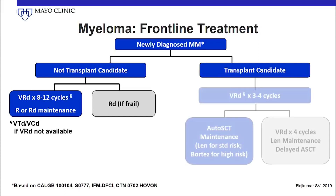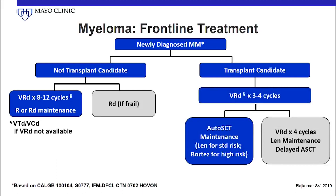If the patient is a transplant candidate, most of us agreed we'd go with VRD induction, autologous stem cell transplantation, and lenalidomide maintenance. The only exception would be for high-risk patients, where we might use a bortezomib-based maintenance — either bortezomib alone or bortezomib len-dex at low doses. I agree with Dr. Moreau that we don't generally prefer a delayed transplant, but there are some standard-risk patients really not keen on wanting a transplant at this time. Given that overall survival is the same, delayed transplant is a reasonable option.